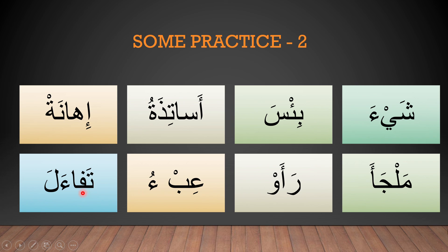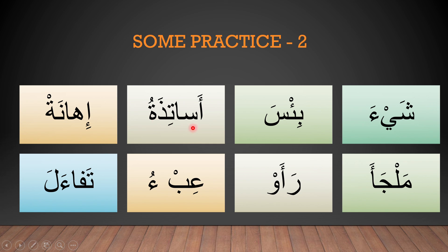Ta-fatha: Ta. Fa-alif: Fa. Ta-fa. Hamza-fatha: A. Ta-fa-a. Lam-fatha: La. Ta-fa-a-la. Sheen-fatha, ya-sukun: Shai. Hamza-fatha: A. Shai-a. Ba-kasra, Hamza-sukun: Bi. Sin-fatha: Sa. Bi-sa. Hamza-fatha: A. Sin-alif: Sa. Asa. Ta-kasra: Ti. Asa-ti. Zal-fatha: Za. Asa-ti-za. Ta-damma: Tu. Asa-ti-za-tu. Hamza-kasra: I. Ha-alif: Ha. I-ha. Nun-fatha, ta-sukun: Na. I-ha-na.